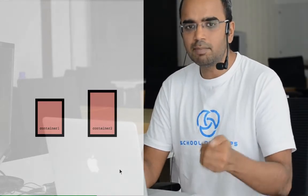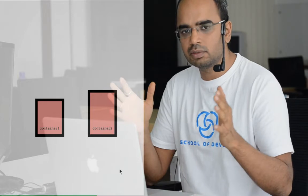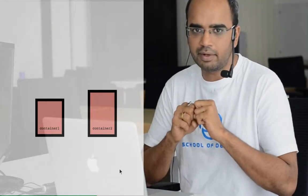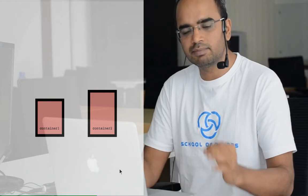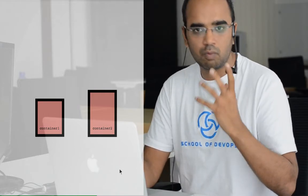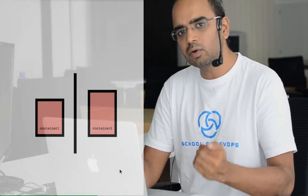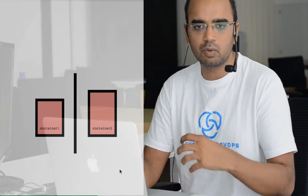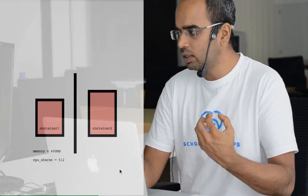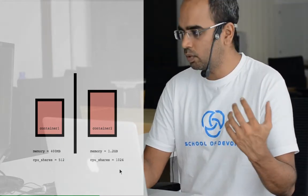When you run processes in isolation and launch multiple containers on the same host, there is a possibility that one container has a memory leak, for example, and it affects the rest of the system or other containers. That's where Google's contribution to the world of containers comes into play — originally called process groups, now known as cgroups, or control groups. What control groups allow you to do, as the name suggests, is control resource utilization.